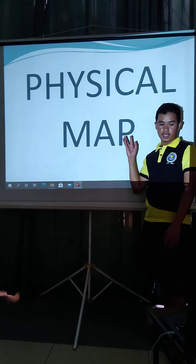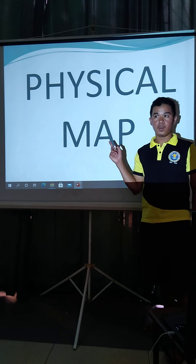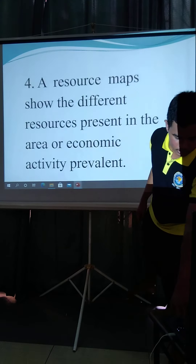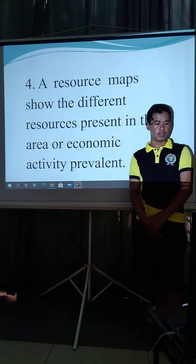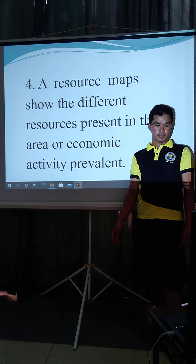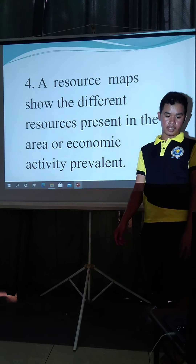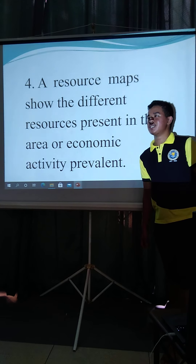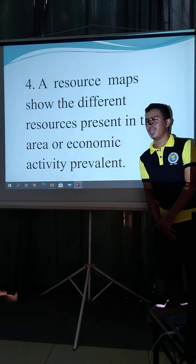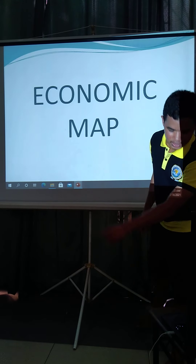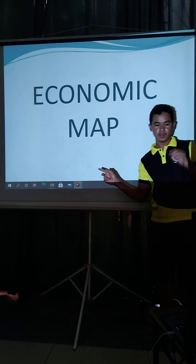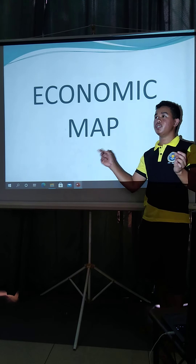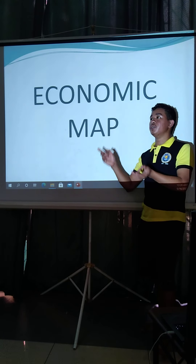Number three refers to the physical map, which talks about the formation or physical features of the land here in the Philippines. Number four: a resource map shows different resources present in an area and economic activity levels.